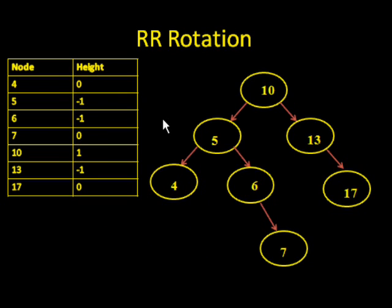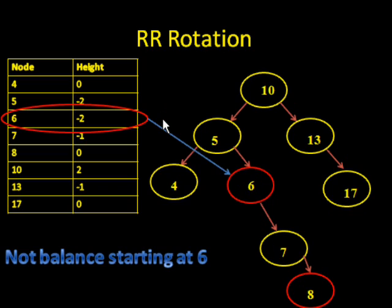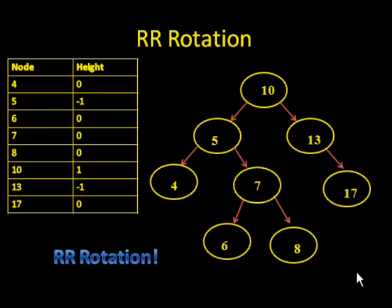For a right-right rotation, if we insert a node like 8, then we insert the node into the right-right side of the node that's unbalanced now. So we can perform a right-right rotation, which is a mirror image of the left-left rotation.